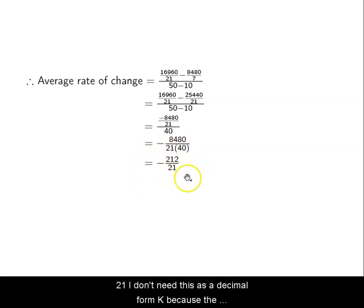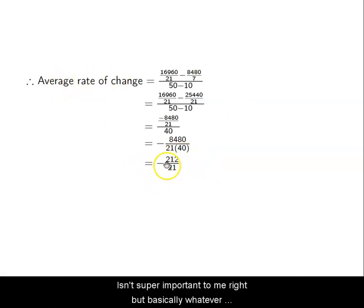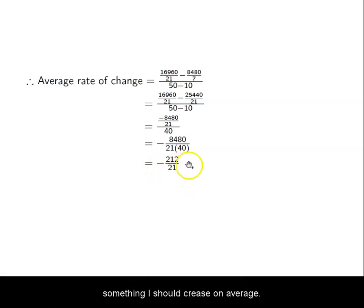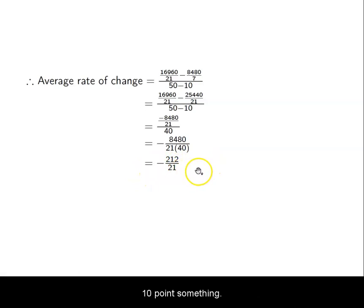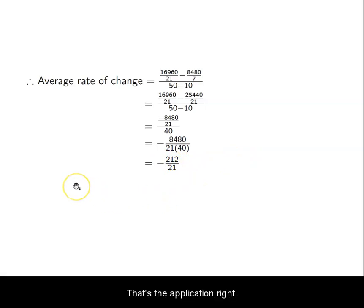I don't need this as a decimal form — the application isn't super important here. But basically whatever this is, it's a little bit more than 10, so about 10-point-something. So on average I decrease about 10-point-something feet per foot of horizontal distance. That's the application — that's the average rate of change. Thanks guys, see you in the next video.